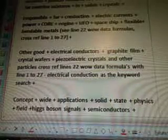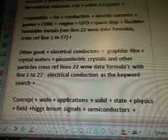Other good electrical conductors is graphite film, crystal wafers, piezoelectric crystals and other particles. Cross reference lines 22, wow data formulas with lines 1 to 27.